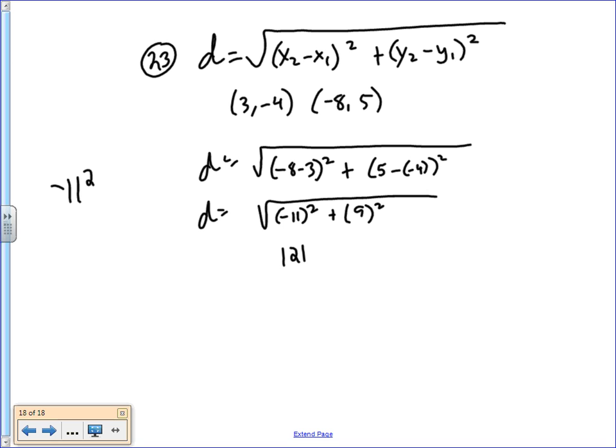If you put -11 squared into your calculator without the parentheses, the way your calculator has to read that is the same thing we talked about yesterday. Your calculator would read this as 11 squared and then make it negative. So this would give you -121. In squaring with the parentheses around it, this number should always end up being a positive answer.